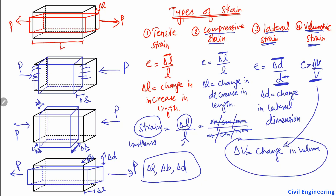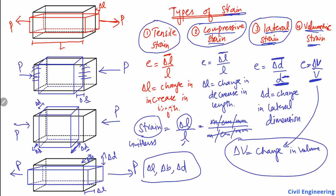Strain is always a unitless quantity. The strains are mostly related to the type of load applied. A tensile load gives tensile strain, a compressive load gives compressive strain, and a lateral or volumetric load causes lateral or volumetric strain respectively. Hope you guys understand — don't forget to subscribe for our Seven Engineering videos. Thank you for watching.